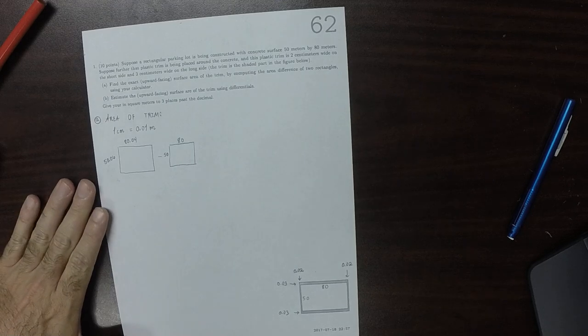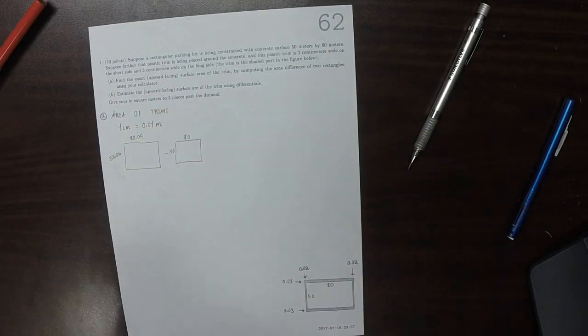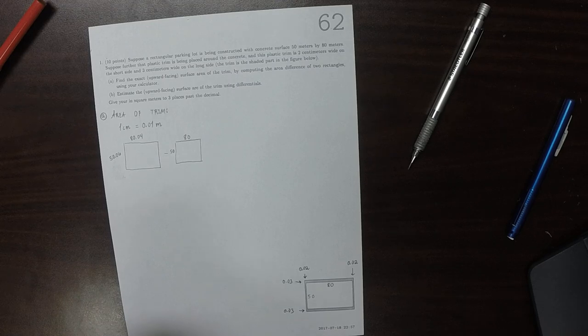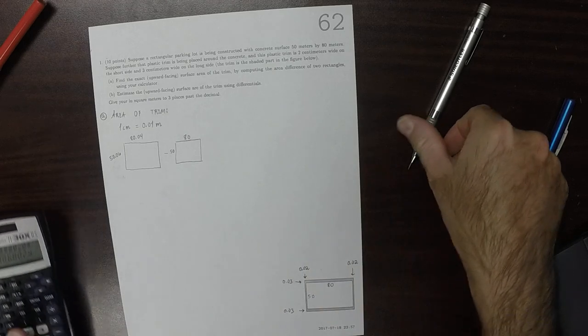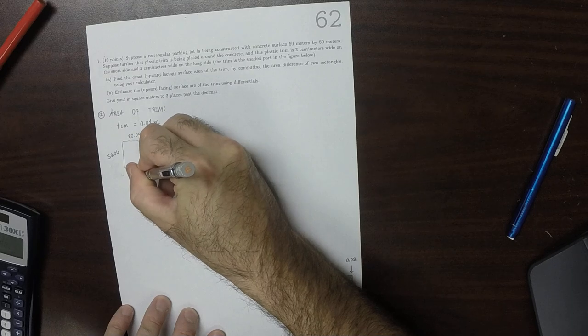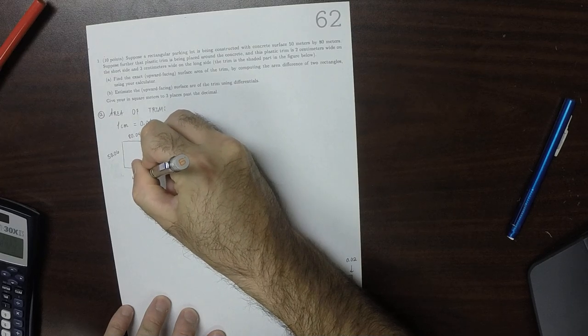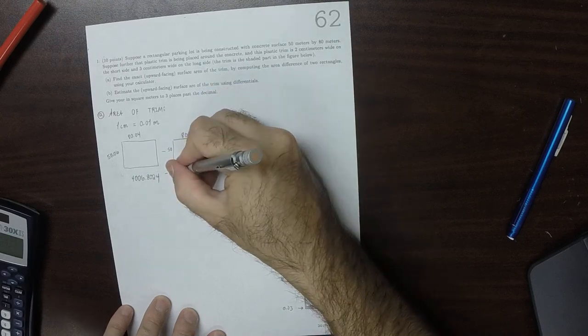Now, look at the picture carefully. So, this would be 50.06 times 80.04. So that's 4,006.8024 and then minus 4,000.